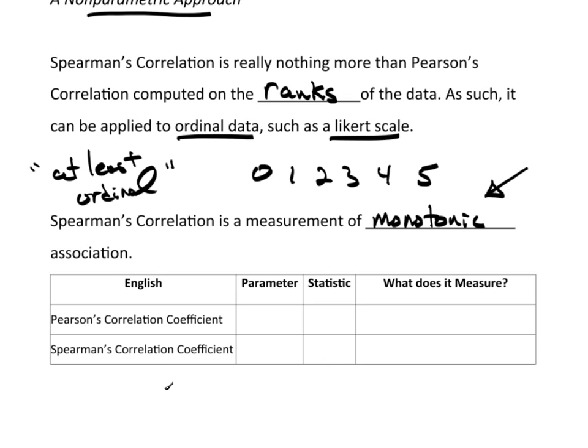So let's just go back and look at some parameters and statistics, some symbols that we use. Pearson's correlation we know is Rho, and R is the statistic, and it measures linear association.